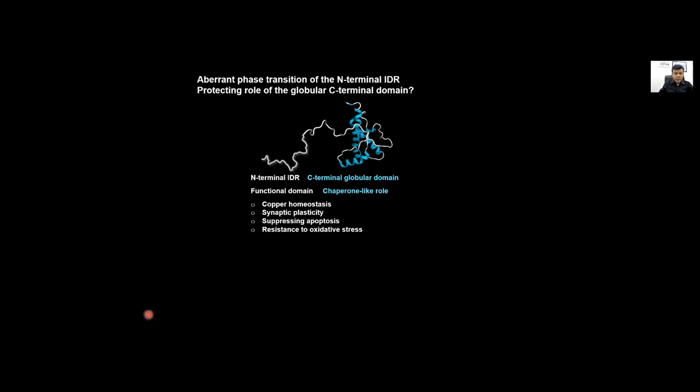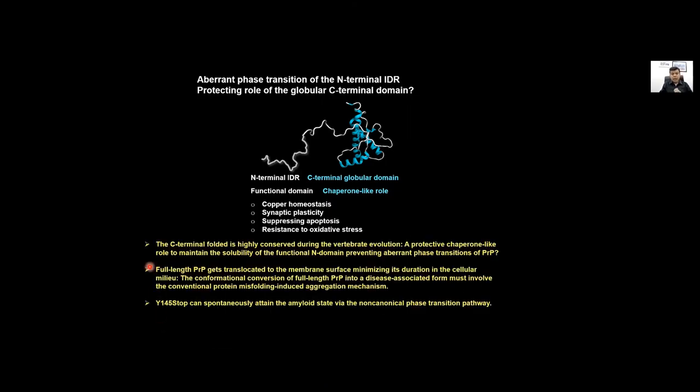We think this might actually be a testable hypothesis. The C-terminal folded domain is highly conserved during vertebrate evolution so there might be a protective role of the C-terminal domain. Y145 stop on the contrary having no C-terminal domain spontaneously can attain the amyloid state via the non-canonical phase transition pathway.